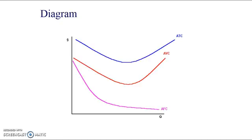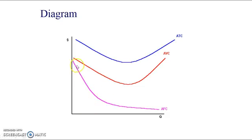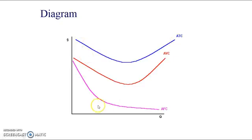On a diagram, average fixed costs start off quite large but keep getting smaller as you divide by more and more units — they tend towards zero but never reach it. Average variable costs show a curved shape: they decrease at first due to increasing returns, then after a certain point diminishing returns cause them to increase. Adding average fixed costs and average variable costs together gives average total cost.